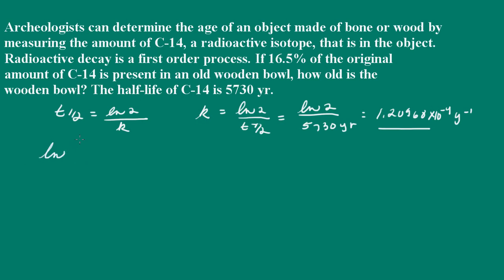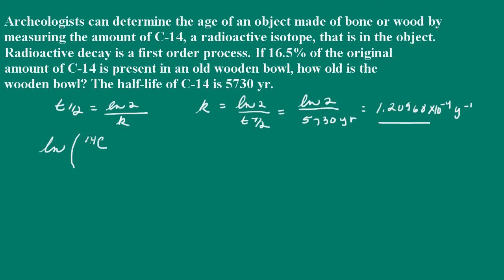So what we have is the natural log, and we'll have the carbon-14 at some time t divided by the initial amount of carbon-14, and that would be equal to a negative k times t. Okay, so what we're going to have to do is solve this equation for t.